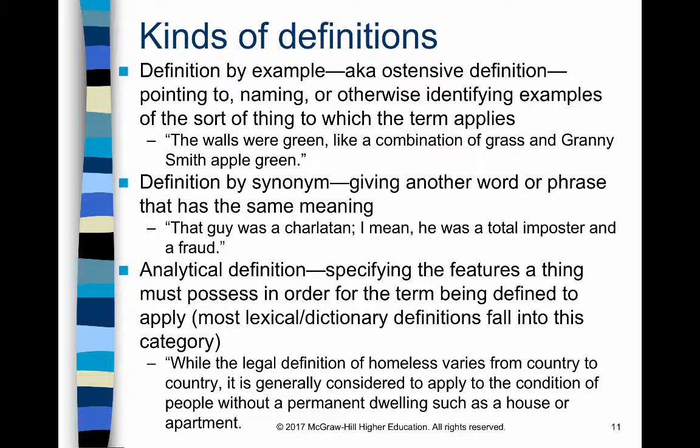An example: 'The walls were green like a combination of grass and Granny Smith apple green.' This person is identifying different examples of things that have the color being described. When you define by example, you either show the thing itself or put an image of what you're talking about into the mind of the listener. It's a fairly direct way of defining things.